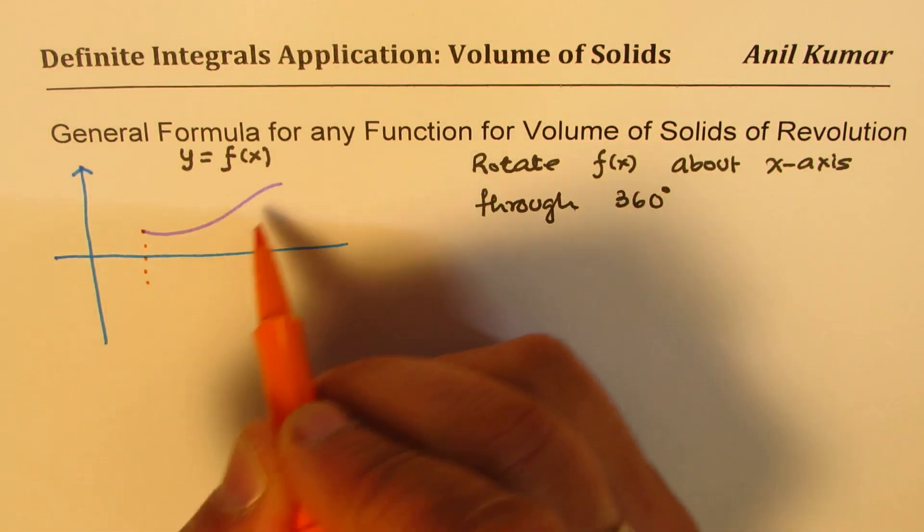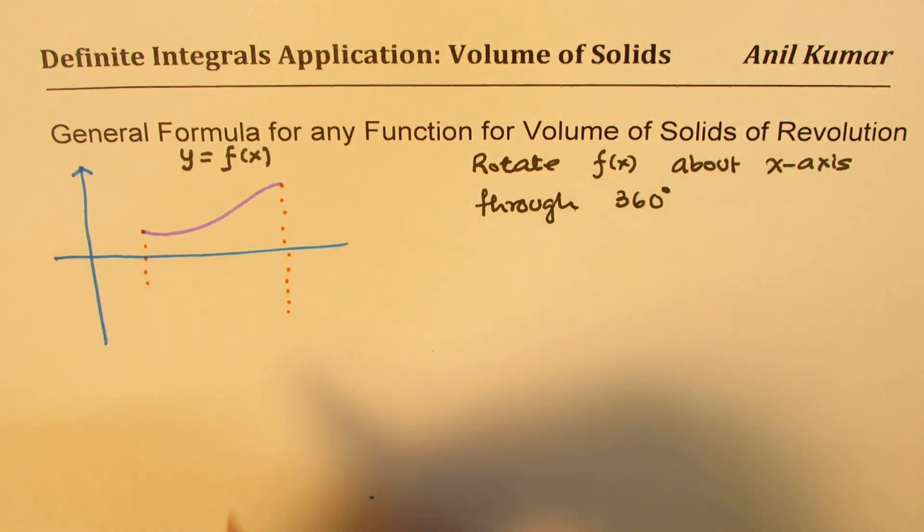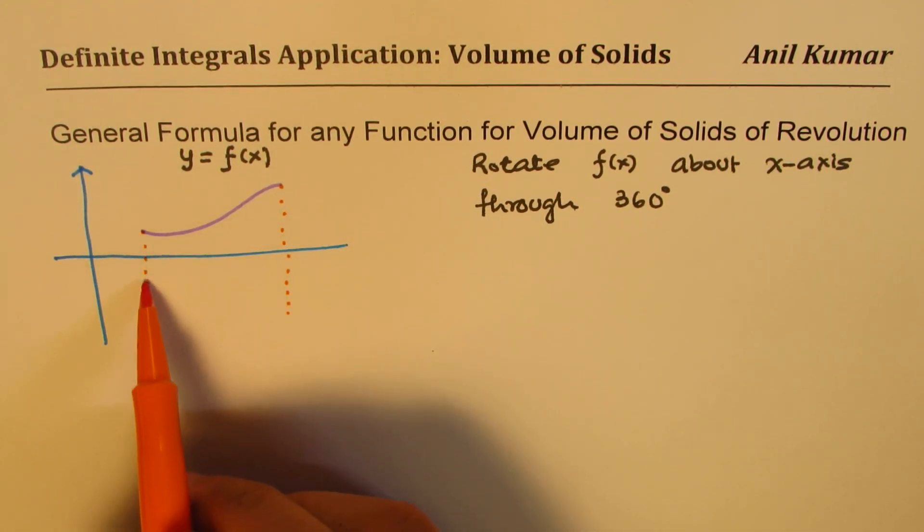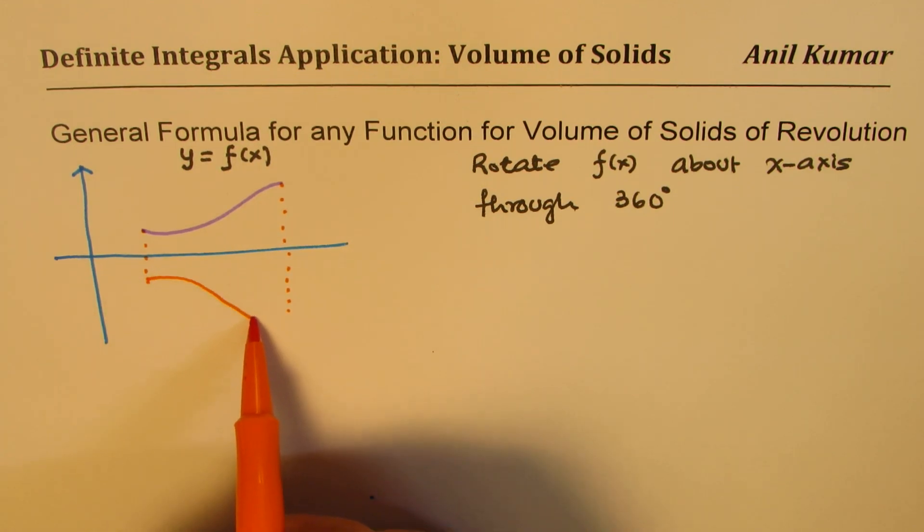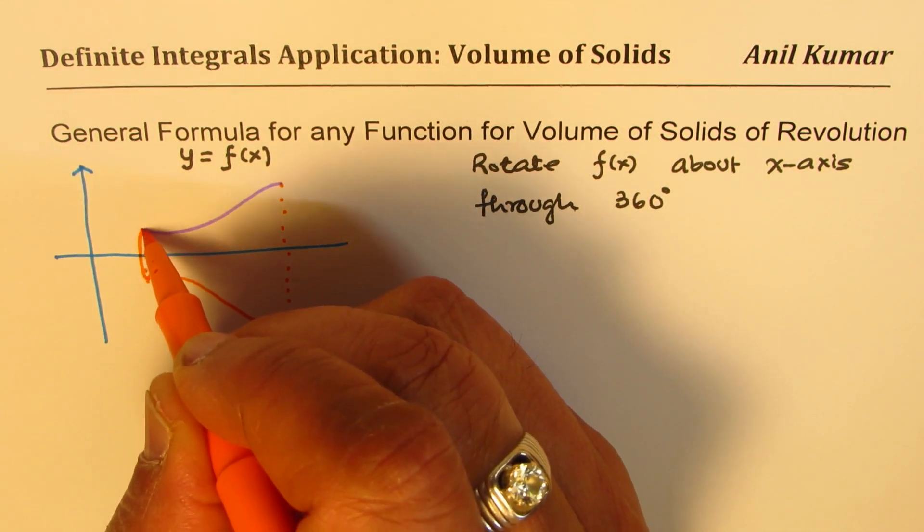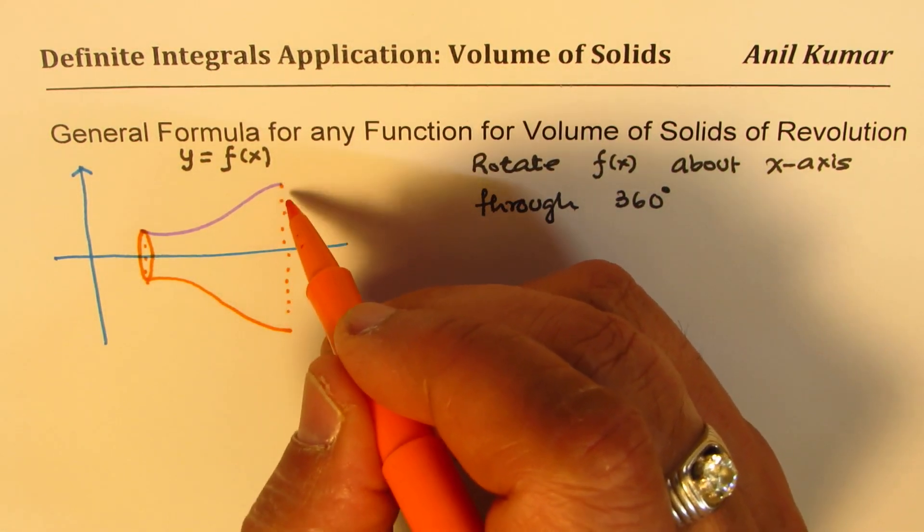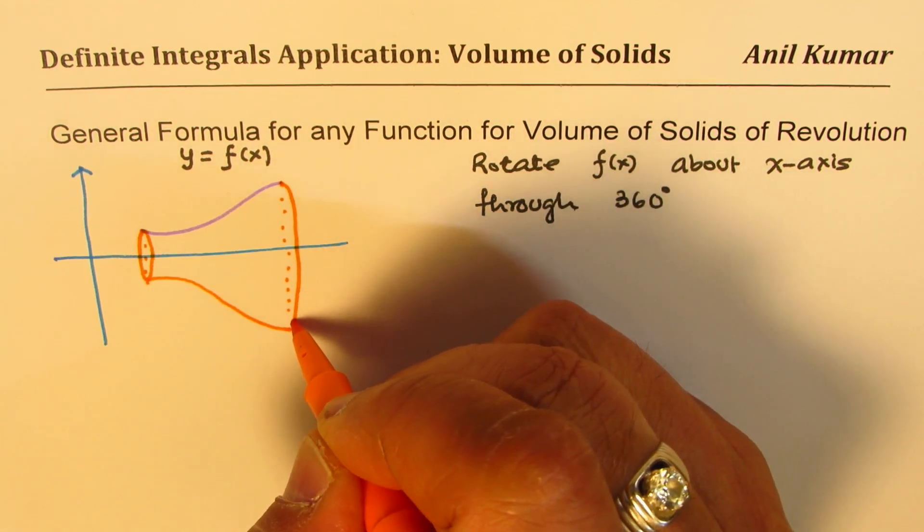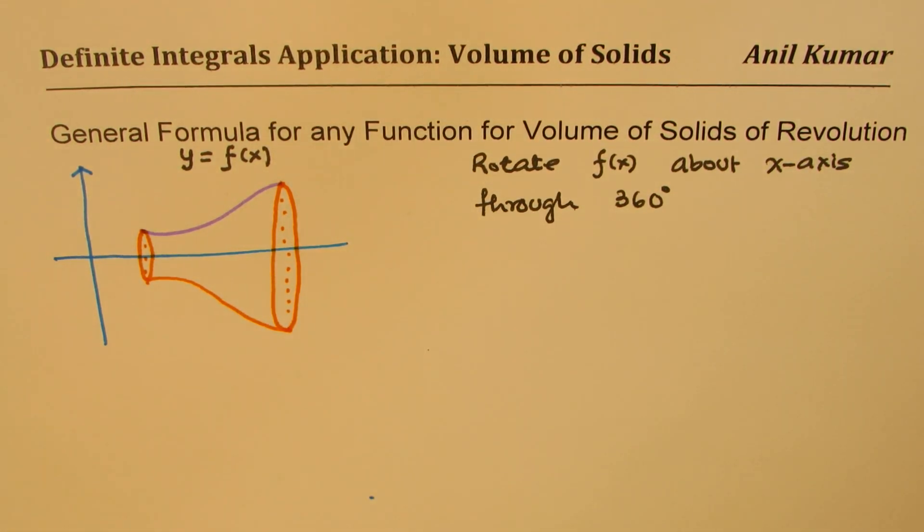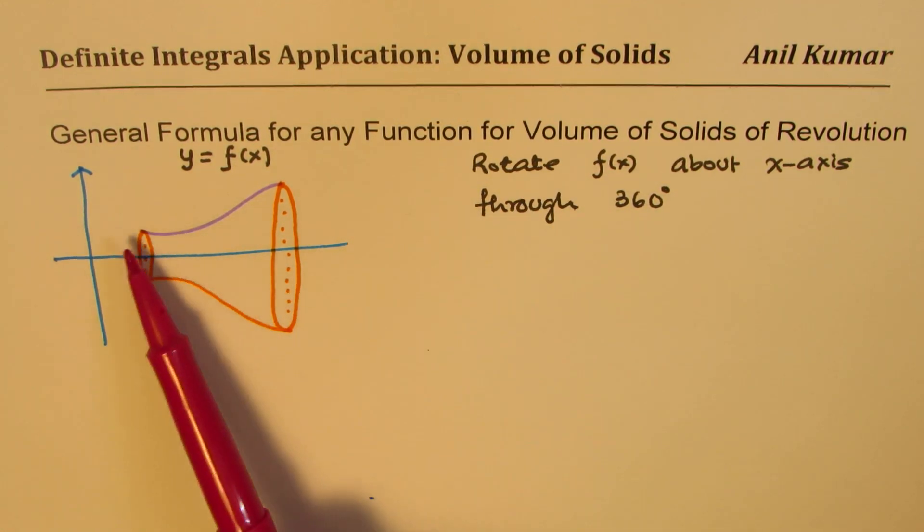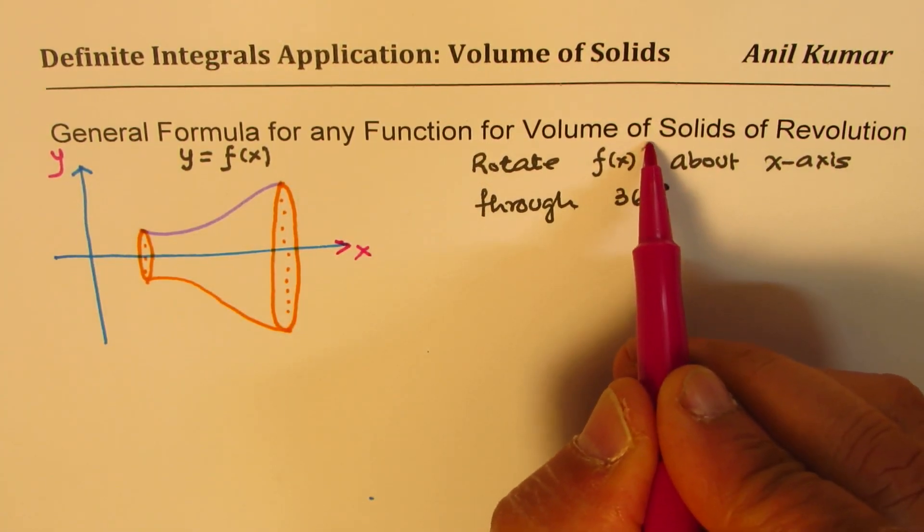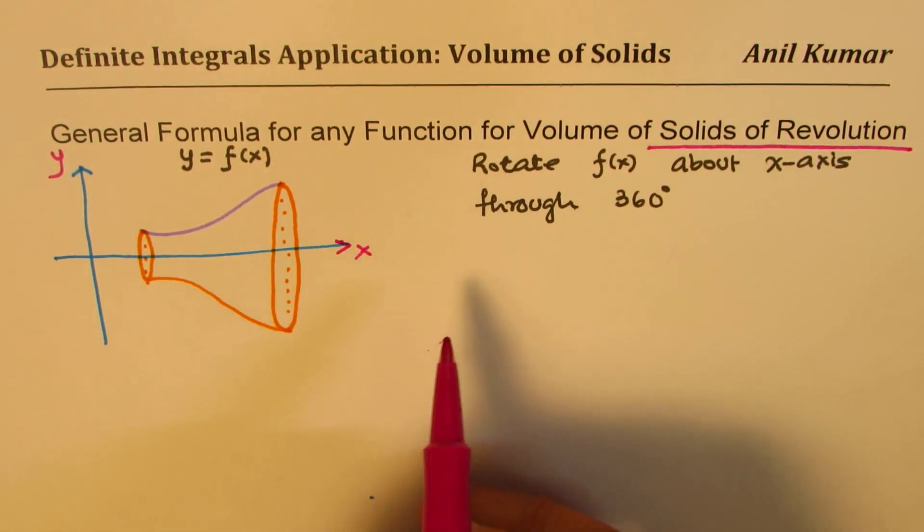So if you do that, what you really get is a kind of a shape which we refer to as solids of revolution. What we get here will be something like this kind of a shape. In three dimensions it will look like this. So whenever you rotate a function about the x-axis, you get solids of revolution.